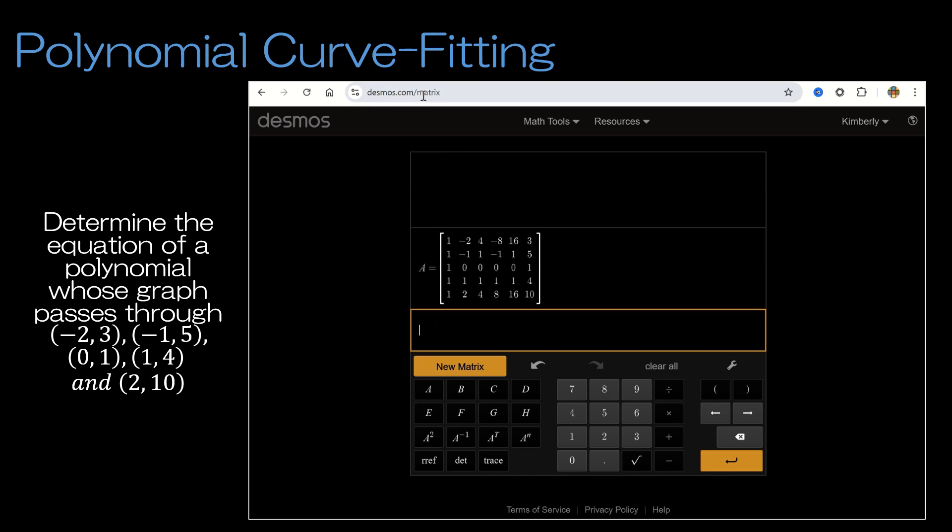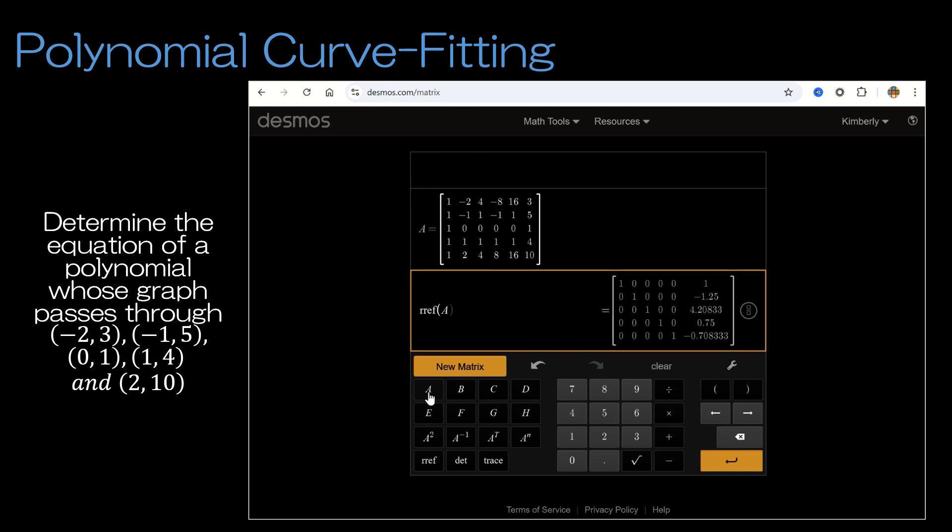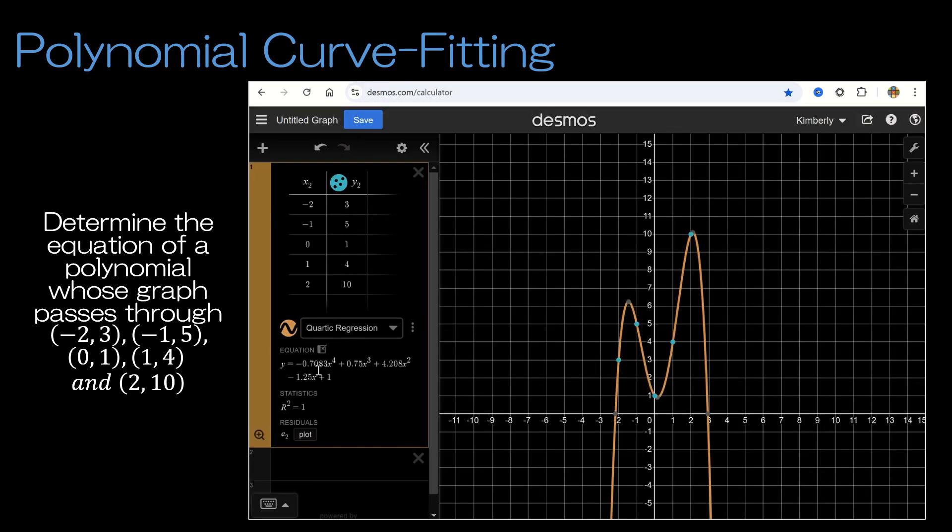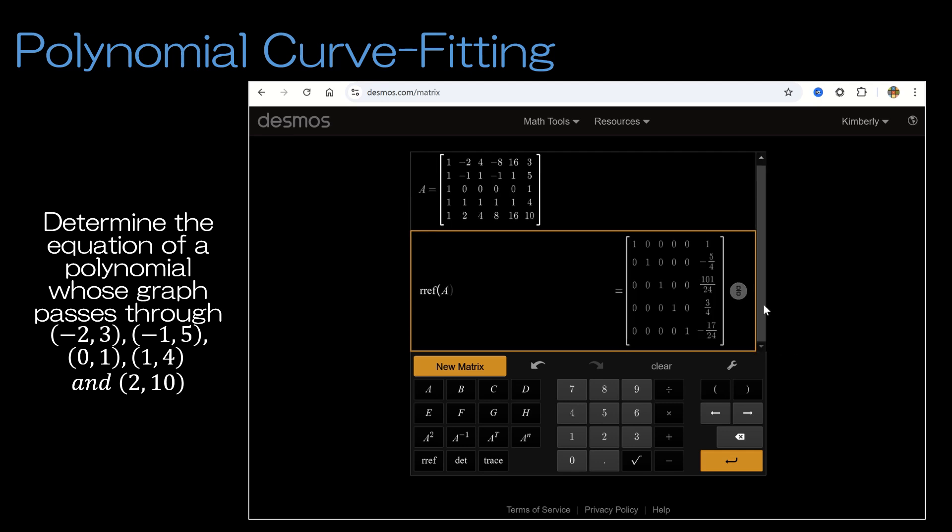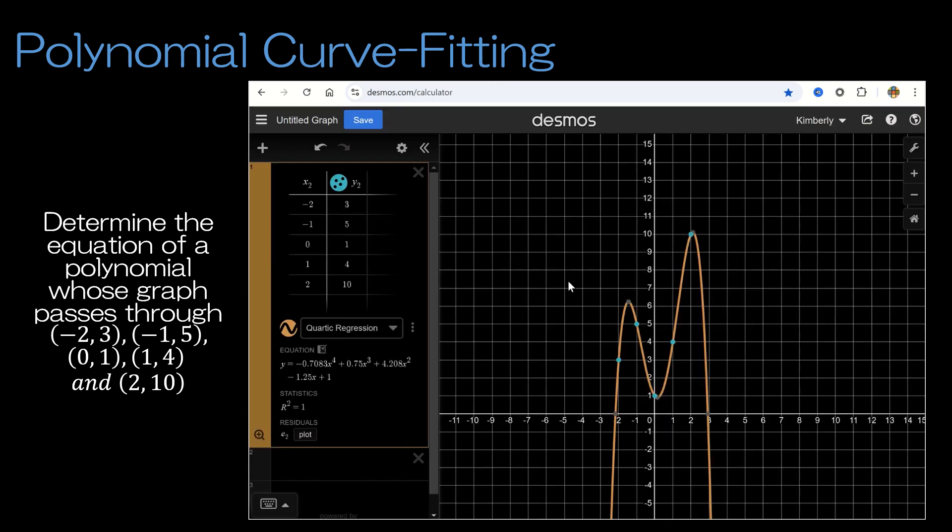You can see I've already entered the matrix we came up with, and I want to find the reduced row echelon form of that matrix, which I called matrix A. It's giving me those same decimals - this would be the x to the 4th coefficient, negative 0.70833 and so forth. The great news is I can click this little calculator and convert to a fraction, and now I can easily write this equation with fraction coefficients and plug it back in to see it's the exact same curve.